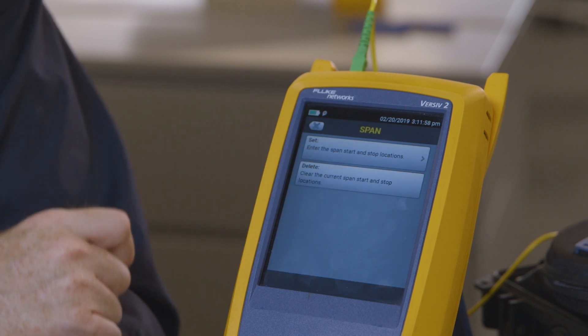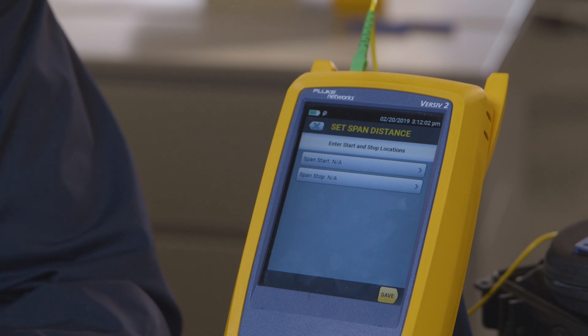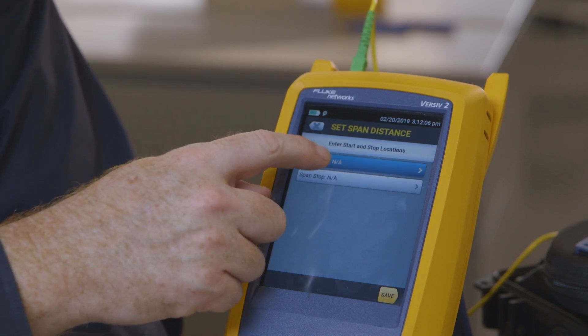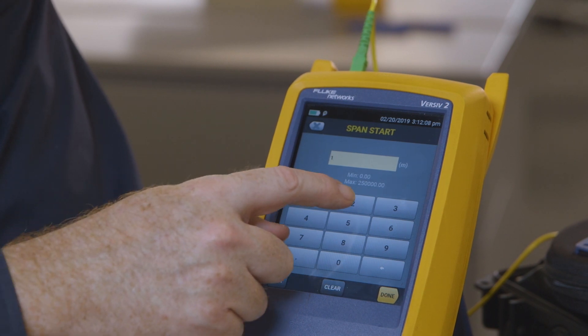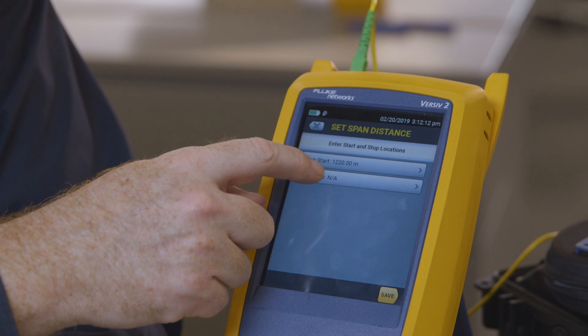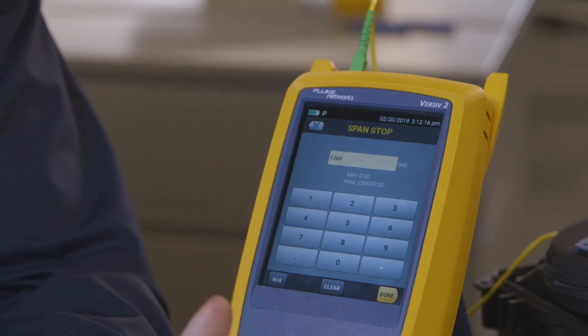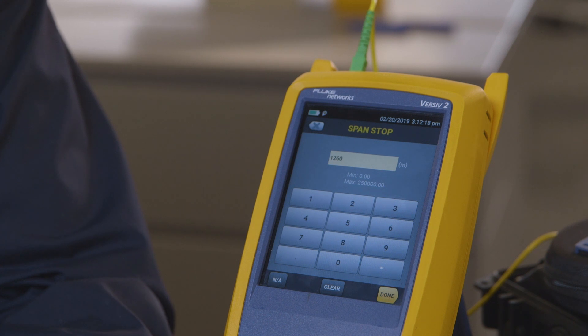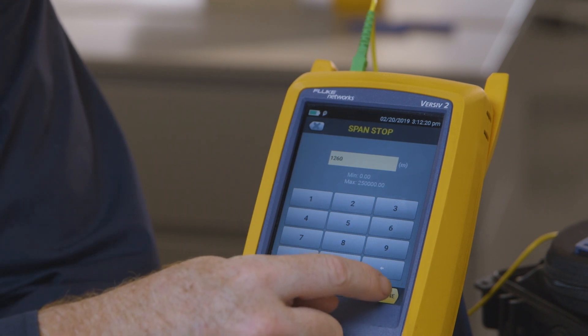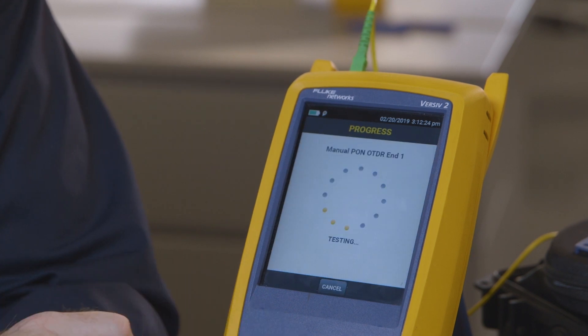Now I know that we were doing our work at about 1,230 meters. So I'm going to tell the span to look at 1,220 meters until 1,260 meters. That will cover the area where my fusion splices were installed. We'll save that and let's push test to start.